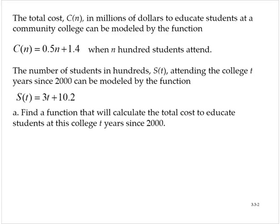The total cost C of n in millions of dollars to educate students at a community college can be modeled by the function C of n equals 0.5n plus 1.4 when n hundred students attend.